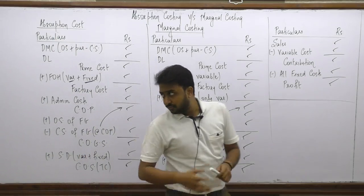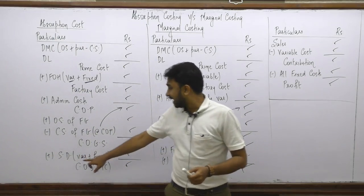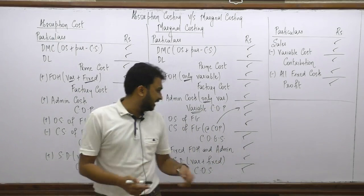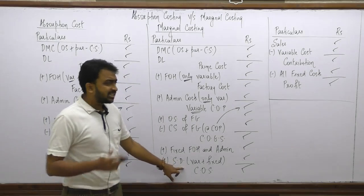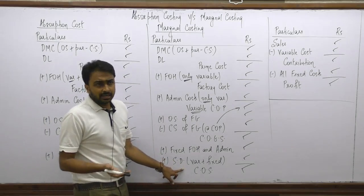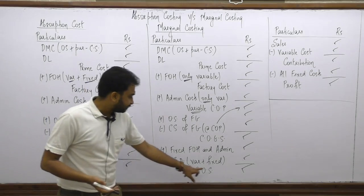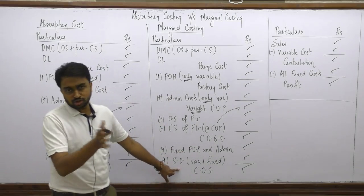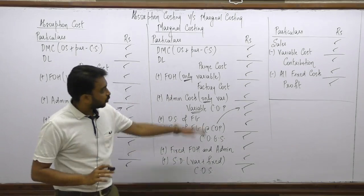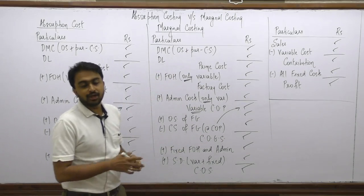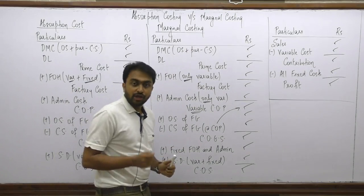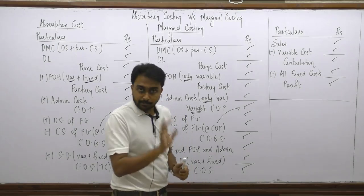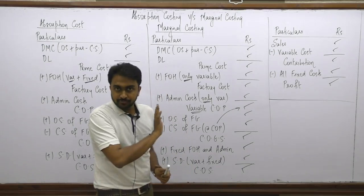After adding back all fixed costs, we add the selling and distribution costs — both variable and fixed — to arrive at the total cost of sales. This completes the marginal costing cost sheet format.